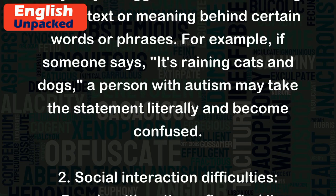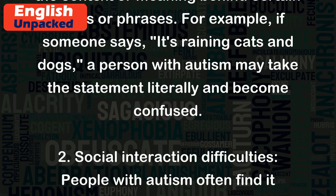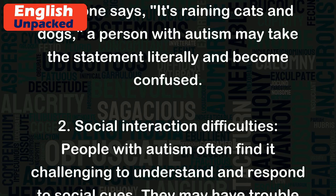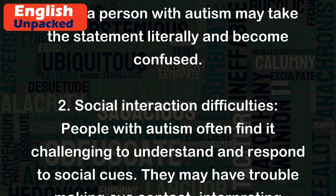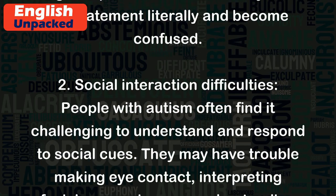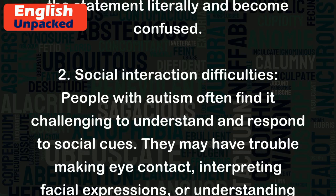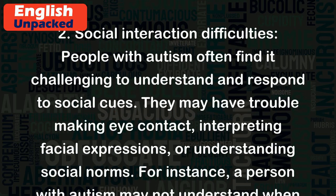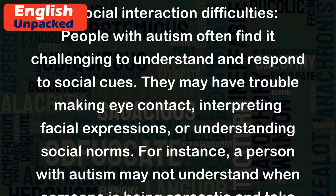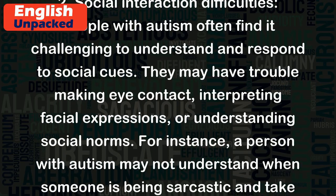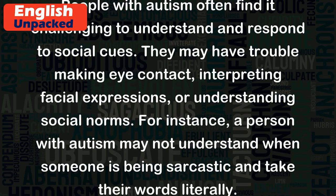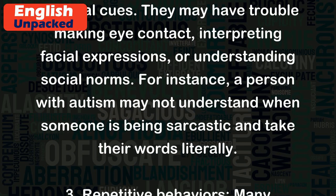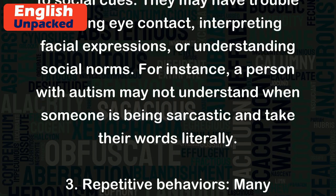2. Social Interaction Difficulties. People with autism often find it challenging to understand and respond to social cues. They may have trouble making eye contact, interpreting facial expressions, or understanding social norms. For instance, a person with autism may not understand when someone is being sarcastic and take their words literally.